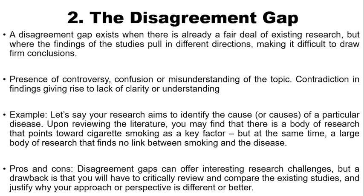A disagreement gap exists when there is already a great deal of existing research, but where the findings of studies pull in different directions, making it difficult to draw a firm conclusion. This happens when there is presence of controversy, confusion, or misunderstanding on the topic. If you have contradictions in findings giving rise to a lack of clarity or understanding, that means there is a disagreement gap.